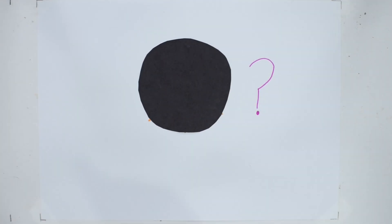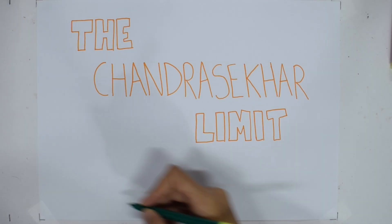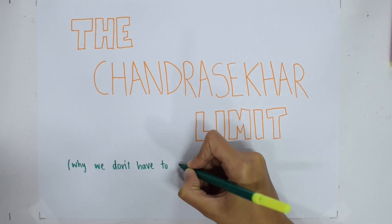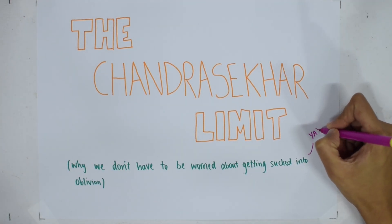Will the sun become a black hole? The simple answer, no. But the reason we know this and the key to understanding why we don't need to be too worried about being sucked into oblivion lies in a value called the Chandrasekhar limit.